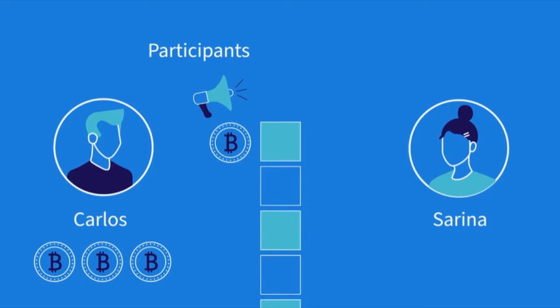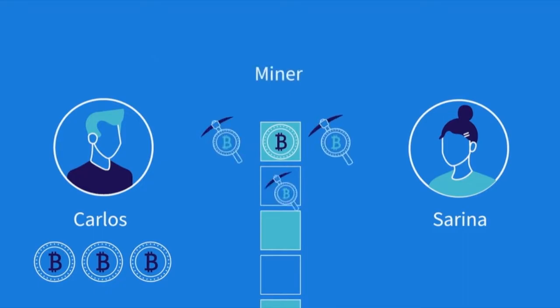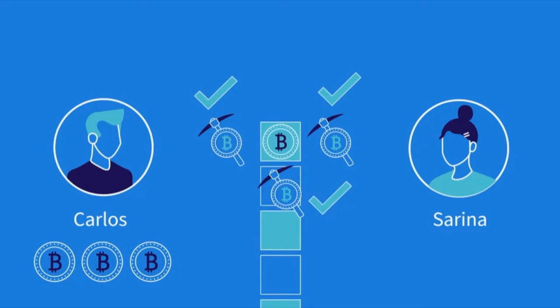After all, it's harder to cheat when everything is visible and everyone is watching. Next, a set of network participants, those with a special role called a miner, work to validate the transaction.